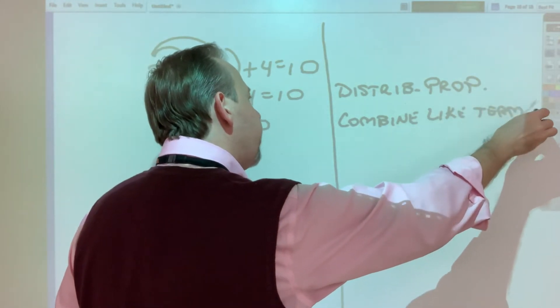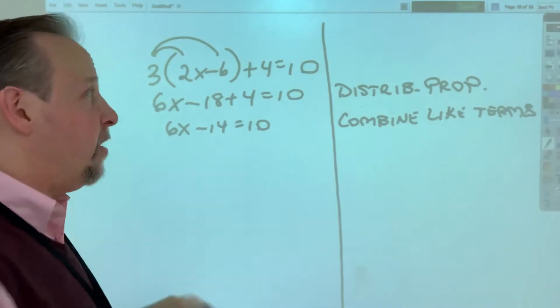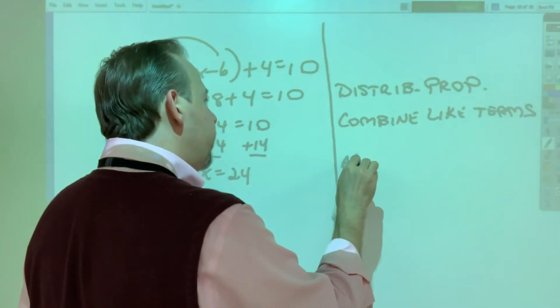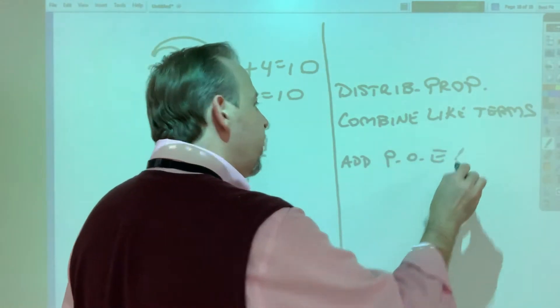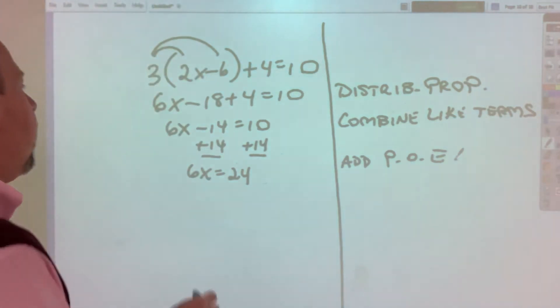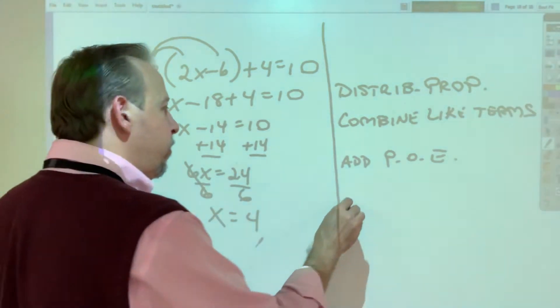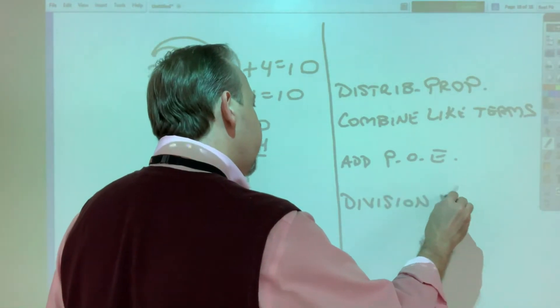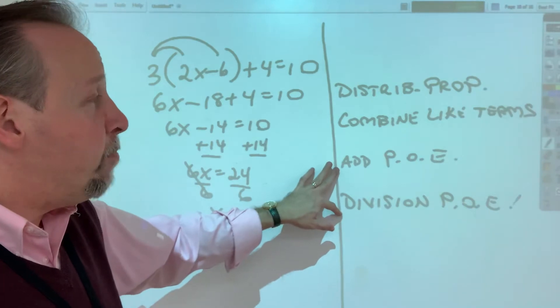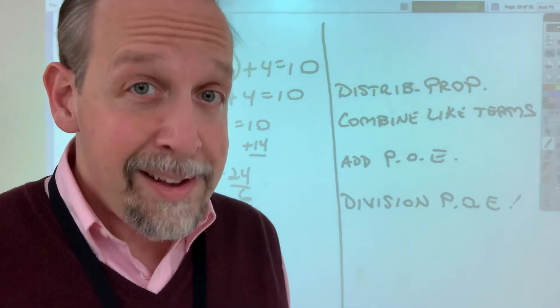And now we move on to the next step. I need to get x by itself, which is always our goal, so I'm going to add 14 to both sides of the equation. If I add 14 to both sides, I get 6x equals 24 and the reason for that was the addition property of equality. Whenever you do something to both sides of an equation, it's a property of equality. And now because I want to get x by itself, I divide by 6. And 24 divided by 6 is 4. What did I just do? The division property of equality. And the problem is done.